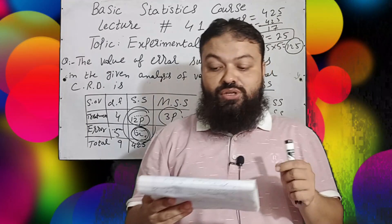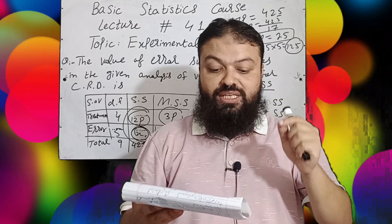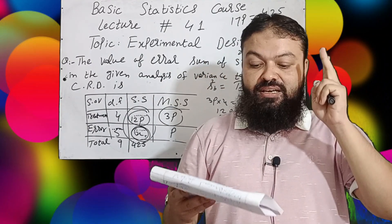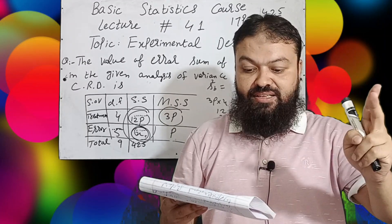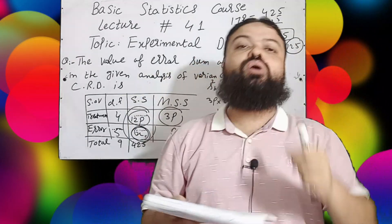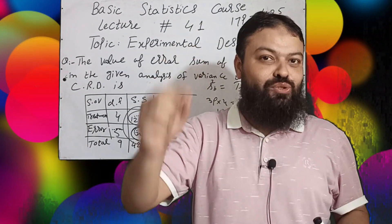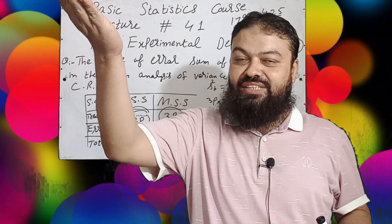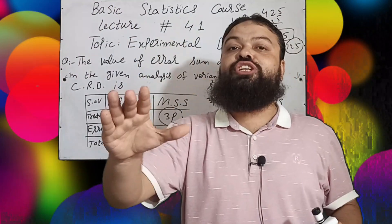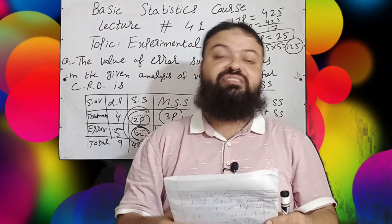Question number six: Local control in experimental design is meant to — a) increase the efficiency of the design, b) reduce the experimental error, c) form homogeneous blocks, d) all of these. All of these is the correct option. Local control is used to increase the efficiency of the design, to reduce the experimental error, and to make homogeneous blocks — a very important concept.